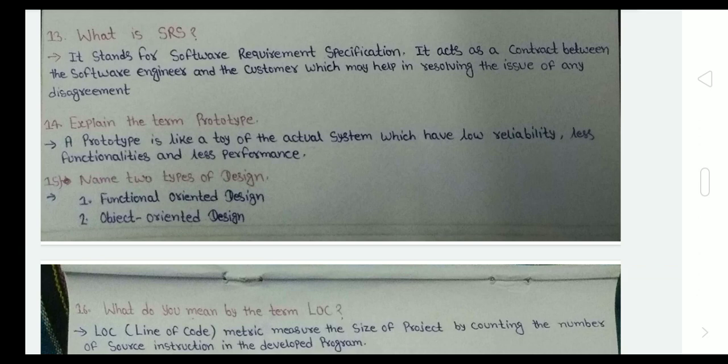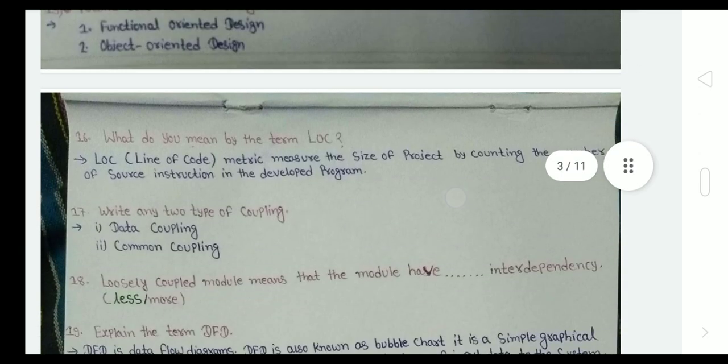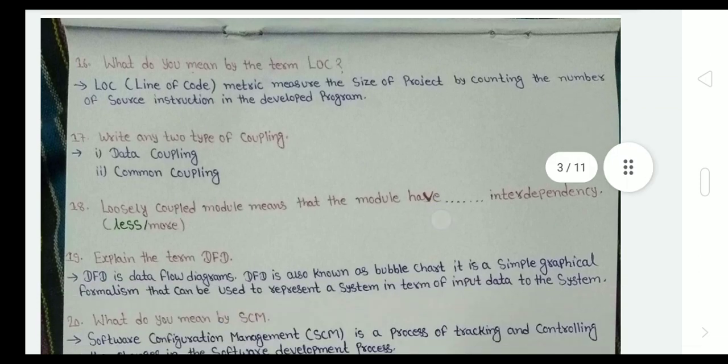Name two types of design: function-oriented design and object-oriented design. What do you mean by the term LOC? Line of Code metric measures the size of a project by counting the number of source instructions in the developed program. So guys, you have to memorize these all objective type questions, as I had seen that many objective and MCQ are repeated.